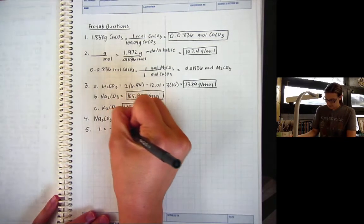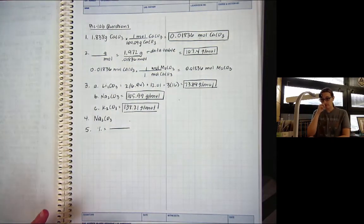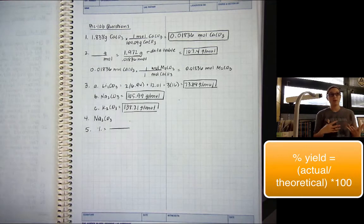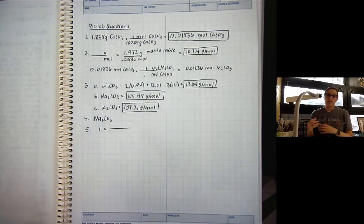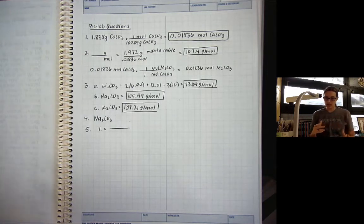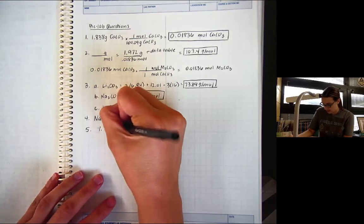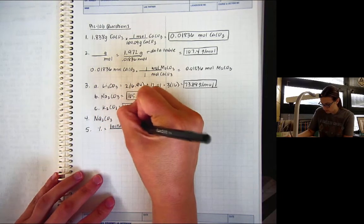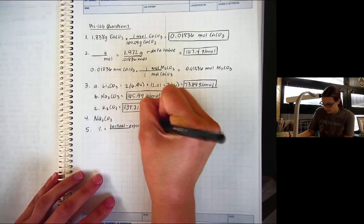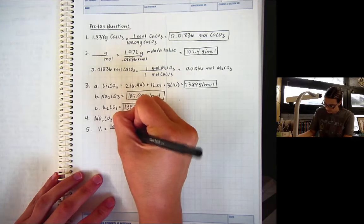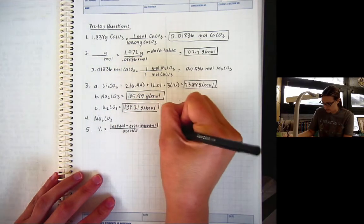So, percent error is different from percent yield. Percent yield is what we do in lab when we're figuring out what percent of what we got did we actually get. Percent error is how close or how far away were we. The lower the percent error, the better. So, percent error, to calculate percent error, is the absolute value of actual minus experimental divided by the actual number times 100.